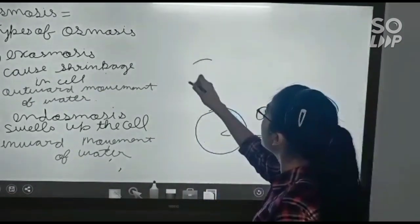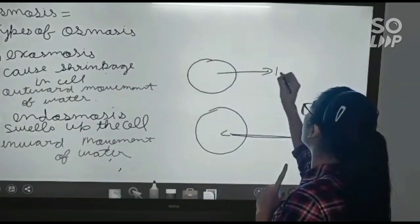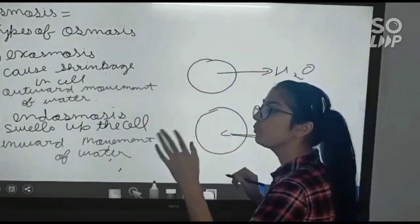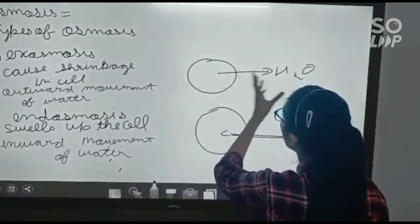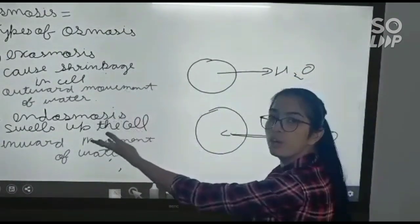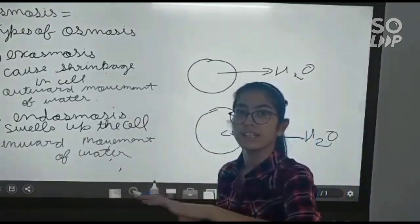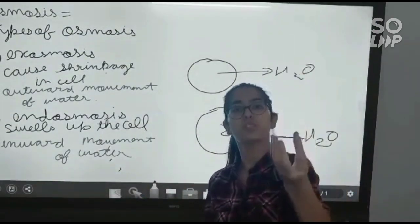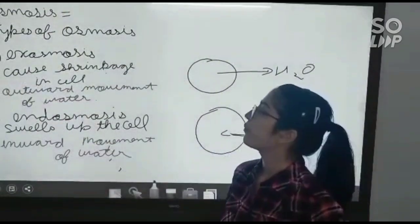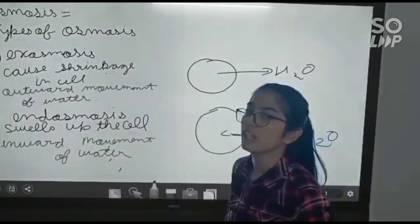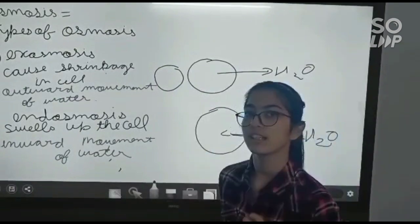Exosmosis is the outward movement of water. Just like the outward movement of air from a balloon causes it to deflate, the outward movement of water from a cell causes it to shrink.